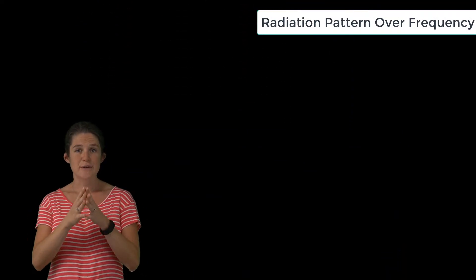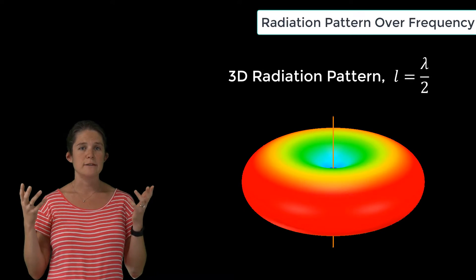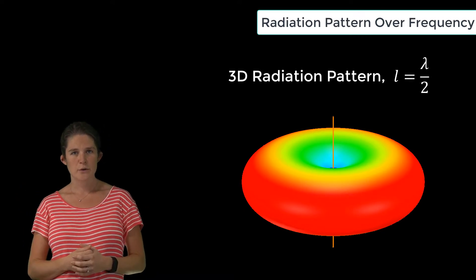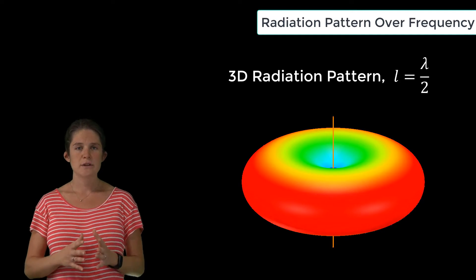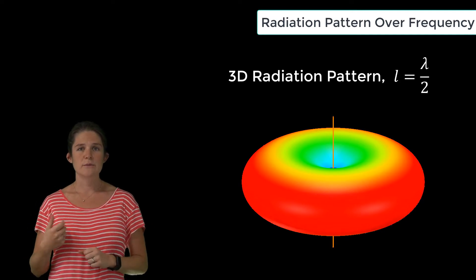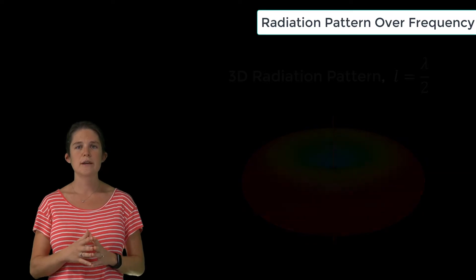Like the input impedance, the radiation pattern of the dipole antenna varies with frequency, or more informatively, it varies with electrical length. So again, I'll give you the equations and then we'll look at some illustrative plots.